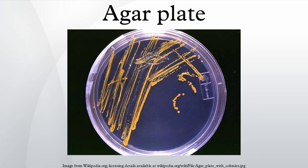An alternative medium, Eosin Methylene Blue, serves a similar purpose. Mannitol salt agar (MSA) is also a selective and differential medium. The mannitol indicates organisms that ferment mannitol. Mannitol fermentation produces lactic acid, lowering the pH and turning the plate yellow. The salt is used to select halophiles — organisms that cannot withstand a high salt content are unable to grow well.